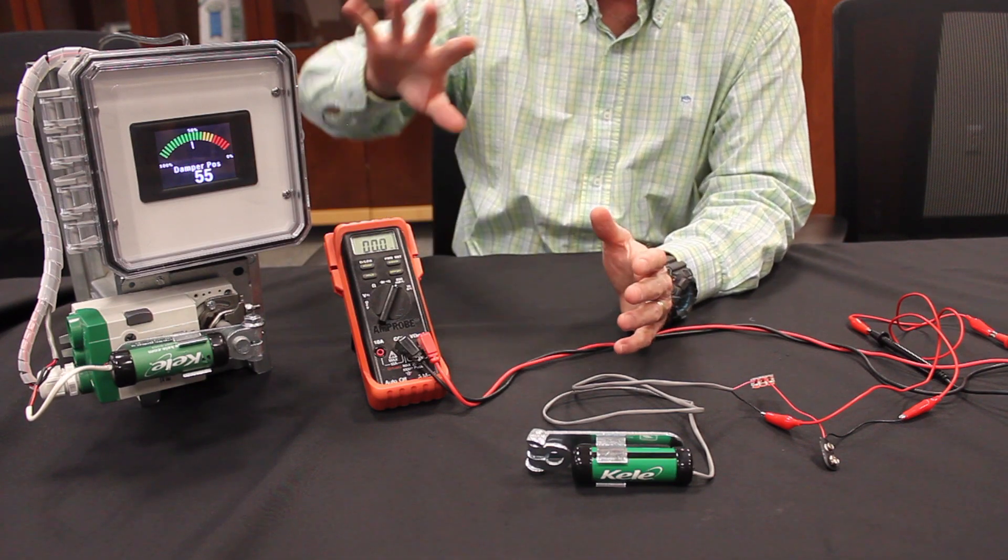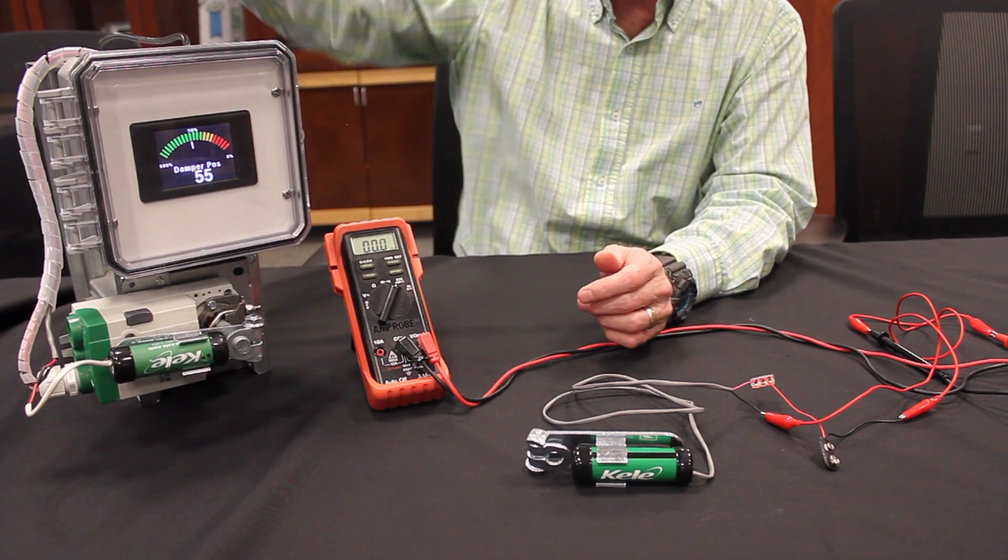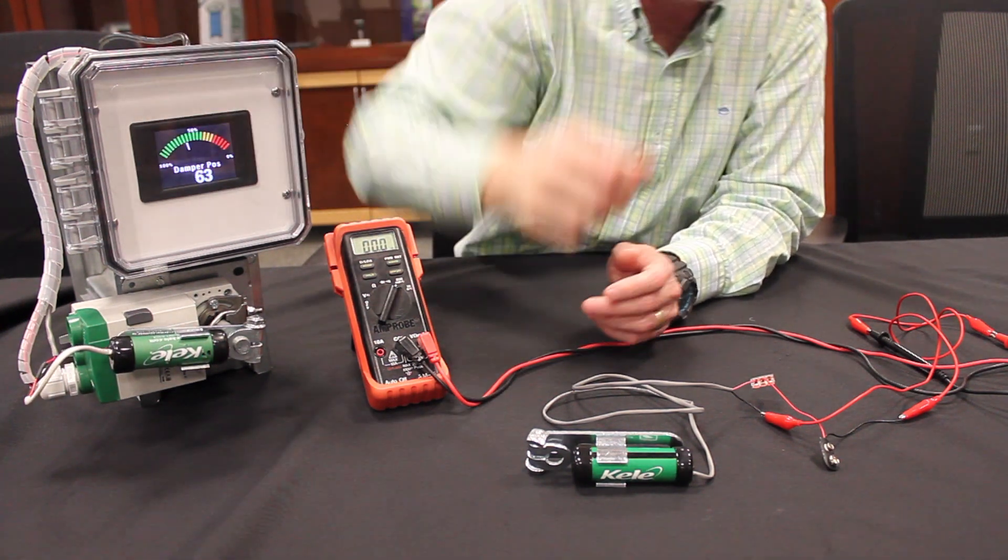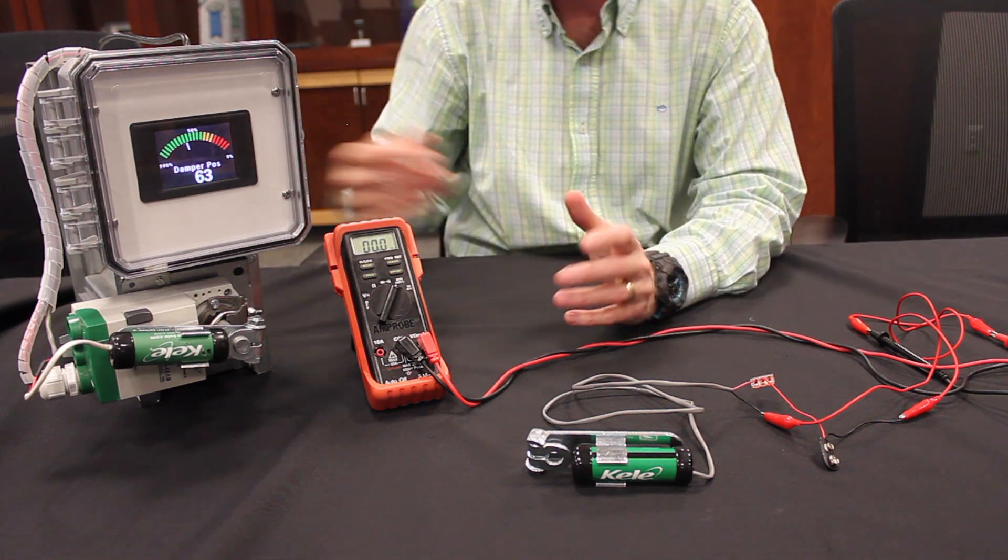I have a demonstration rig set up here. The TT470 is attached to an actuator, there are damper blades in the back, and you see the display panel showing the position of the damper blades.